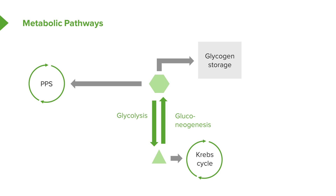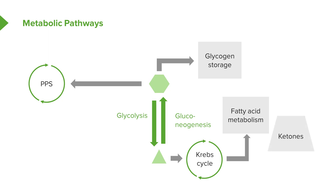Pyruvate is sent through the Krebs cycle to create ATP, the energy for which most of our protein processes occur. That's also how we can feed into the fatty acid metabolism pathway, and we'll talk about some diseases of fatty acid metabolism as well. During fatty acid metabolism, that's also how we make ketones. Patients may have problems making ketones, and we'll talk about some conditions there as well.